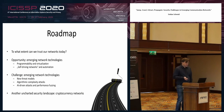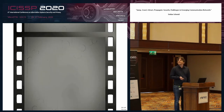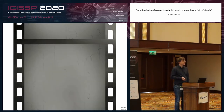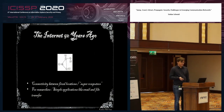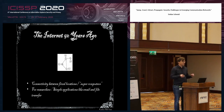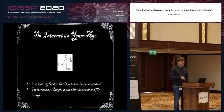So to what extent can we trust our networks today? To understand that, let's go back a little bit in time — let's see how the Internet looked 50 years ago. This was the Internet 50 years ago. The main purpose was to provide connectivity between some fixed locations that were like supercomputers at that time. Obviously today every phone is a better supercomputer than that, but that was the beginning. It was used by researchers mainly for simple applications like email or file transfer.